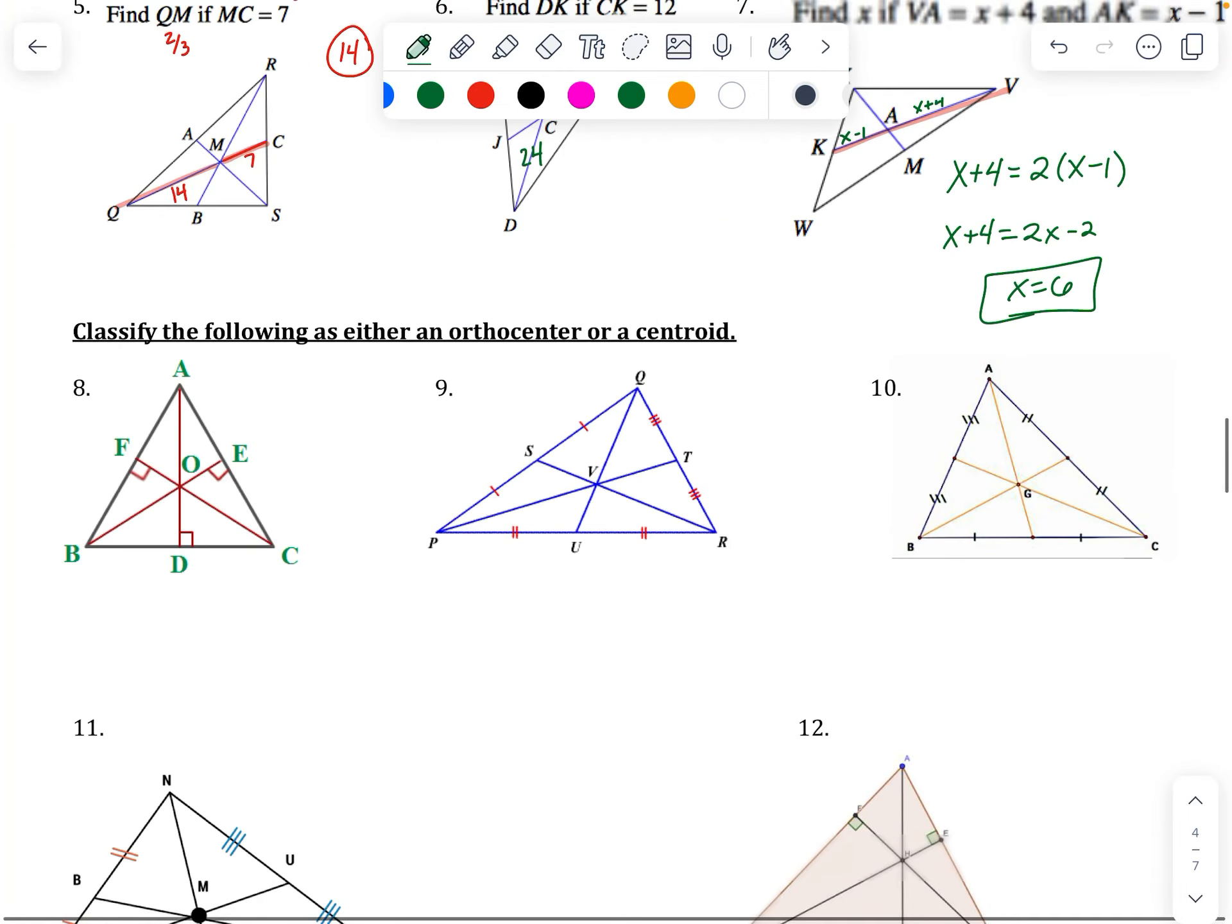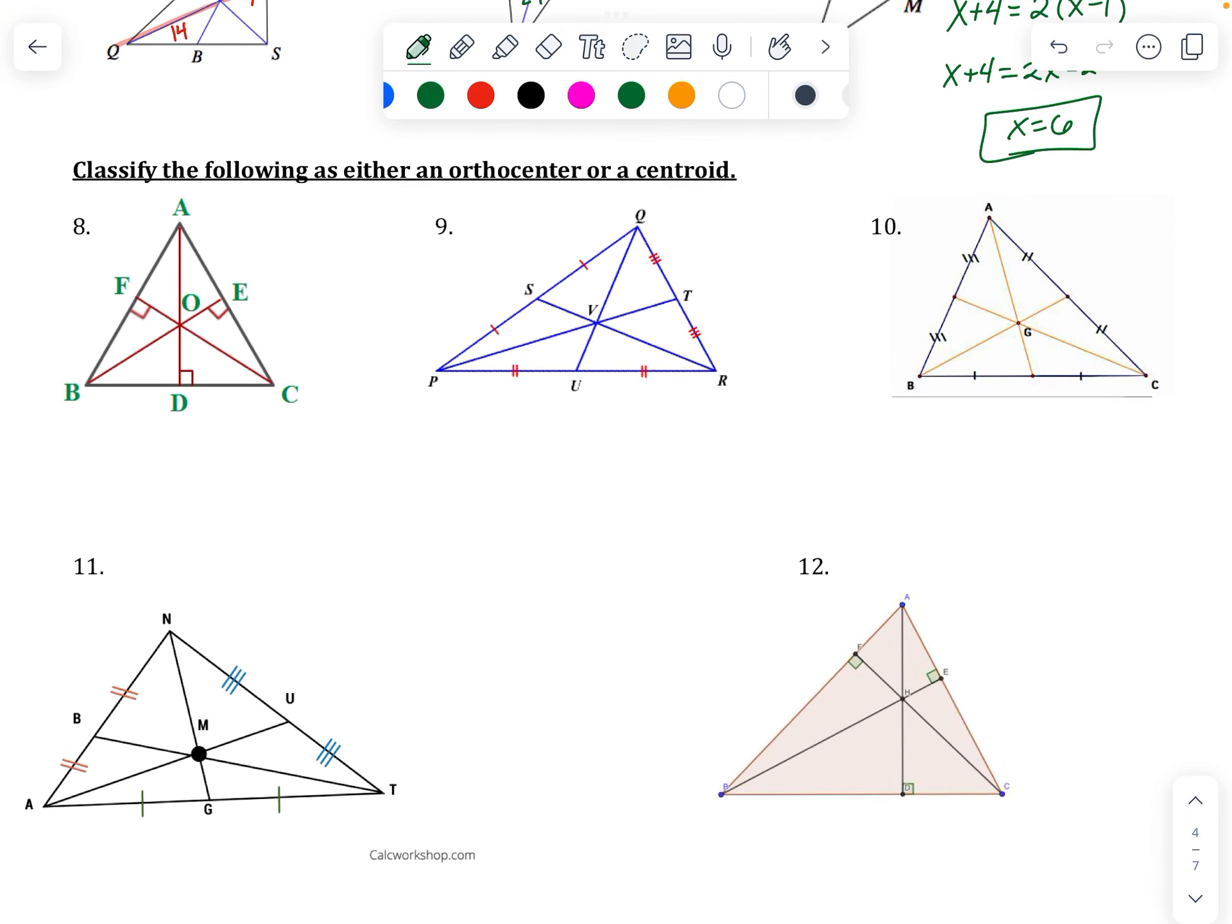All right, then classifying orthocenter centroid. Orthocenter must be an altitude. That's an easier one to spot in this case because it's got to have a 90-degree angle. And a centroid is going to go to a midpoint, so it's going to bisect the sides. So please try to identify these five, and then unpause the video and check your work when you're done.